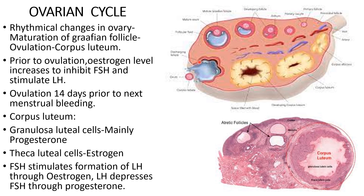If fertilization occurs, the secondary oocyte — initially arrested in metaphase — will complete the second meiotic division, form a mature ovum, and on fertilizing with a spermatozoon will form a zygote. If fertilization does not occur, the secondary oocyte will degenerate. The wall of the Graafian follicle will then collapse and be converted to the corpus luteum. The membrana granulosa is surrounded by stromal cells forming theca interna and theca externa — theca interna being cellular and vascular, theca externa being fibrous.